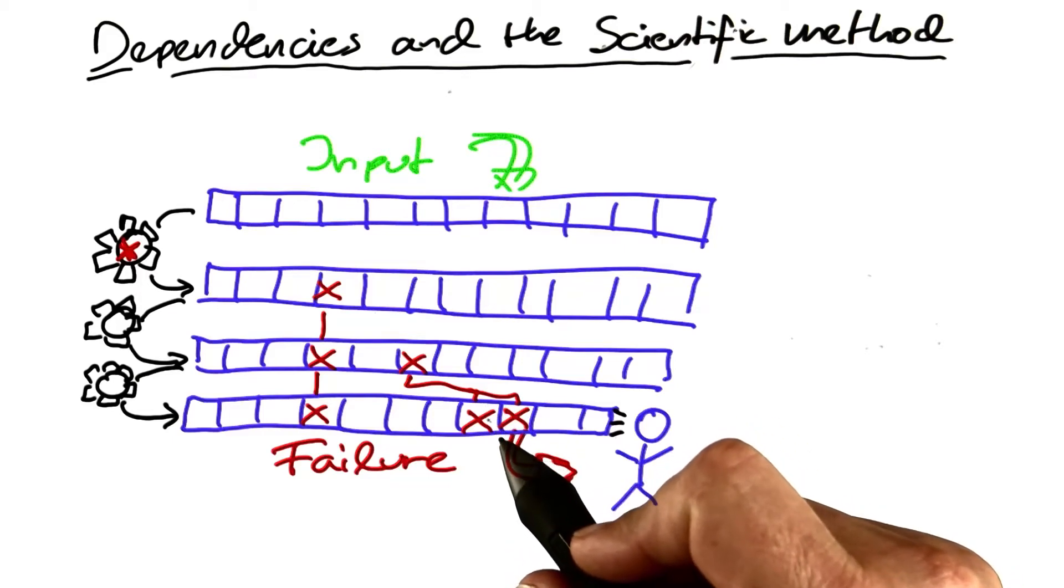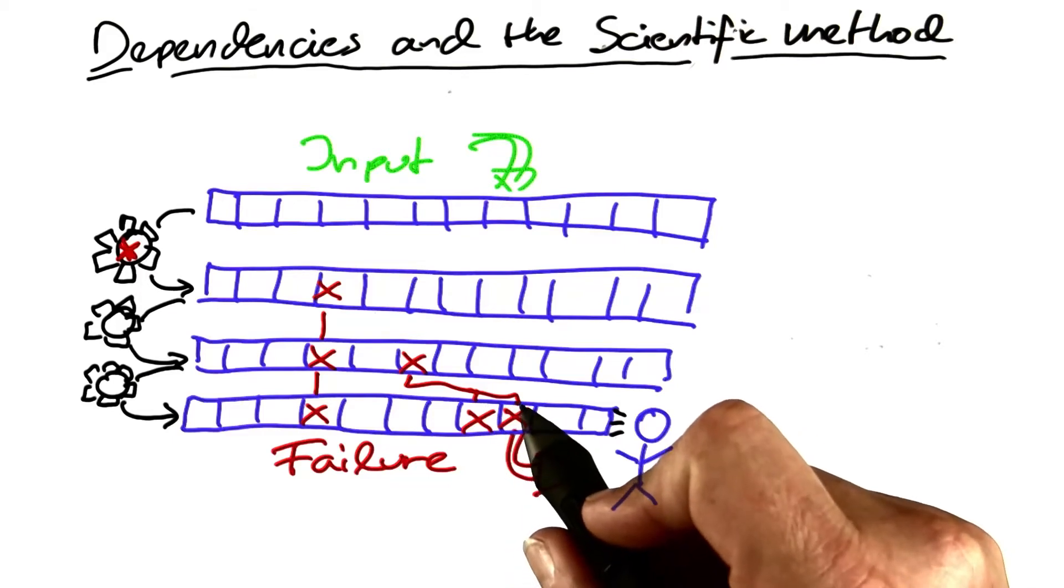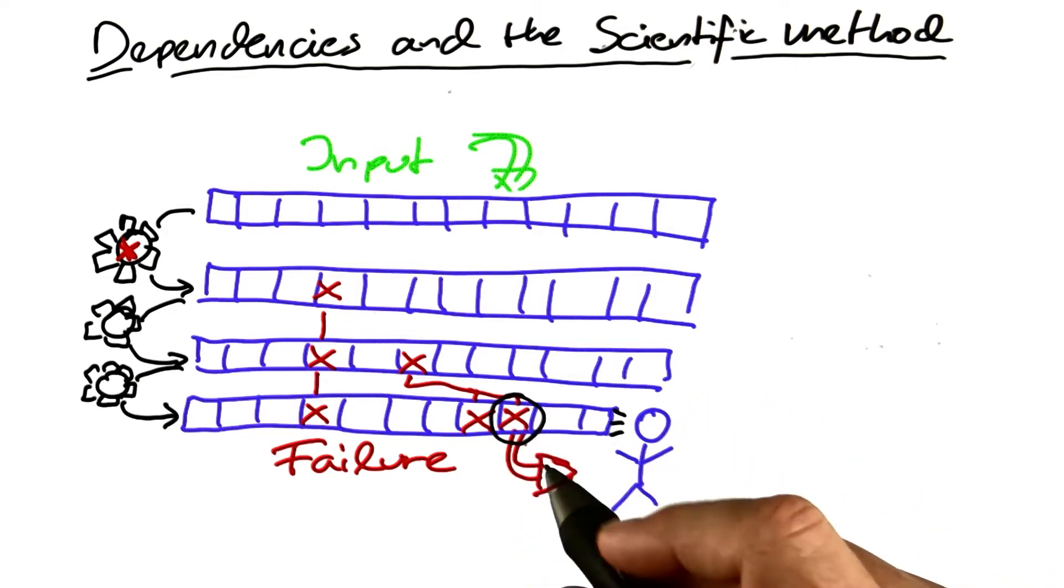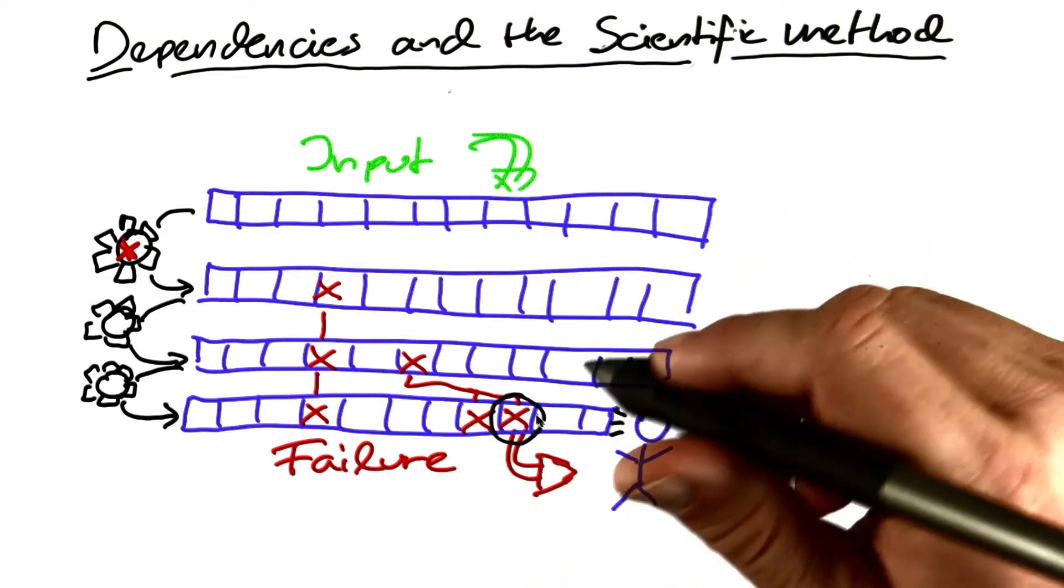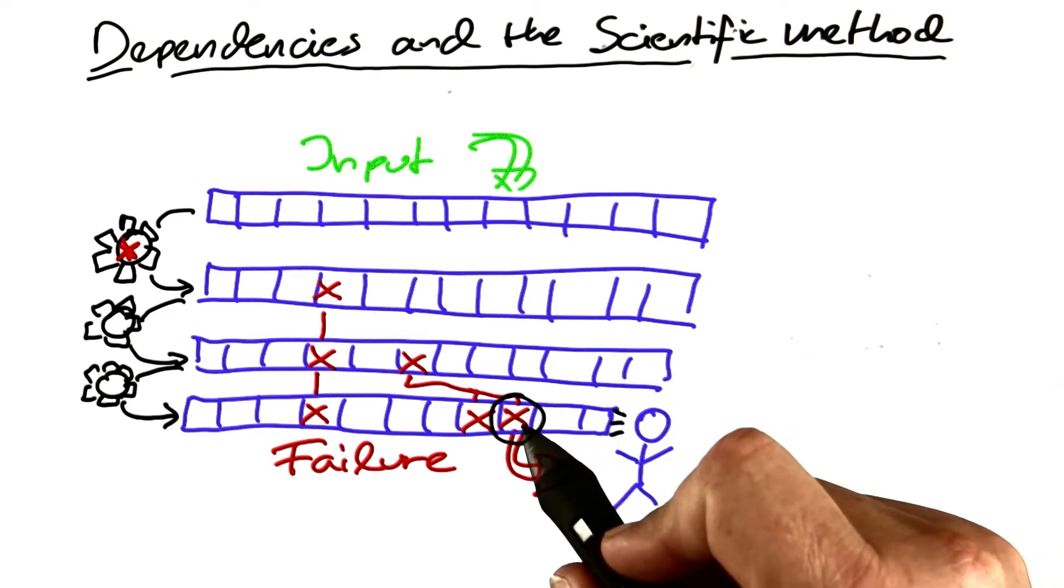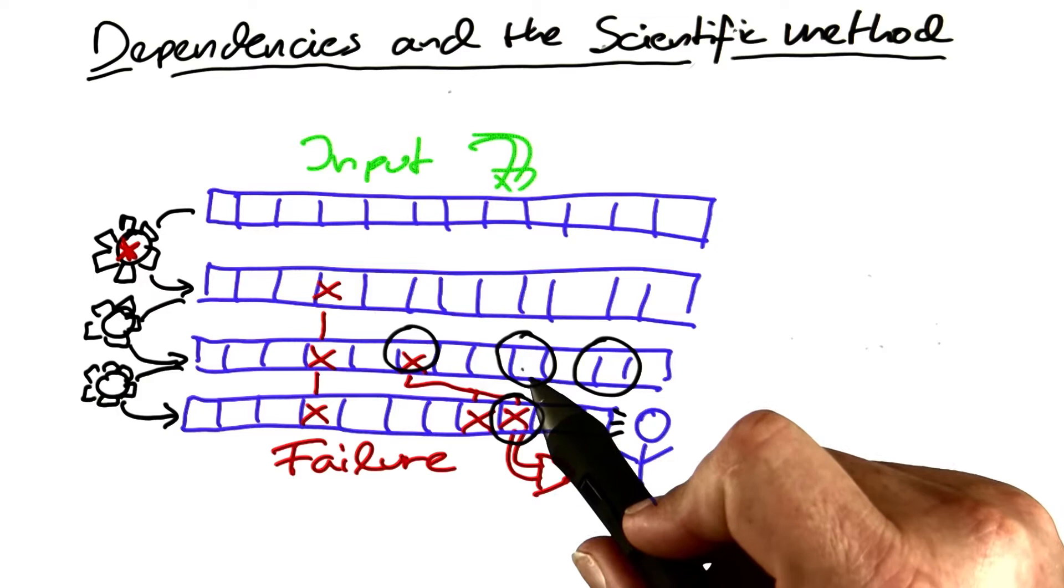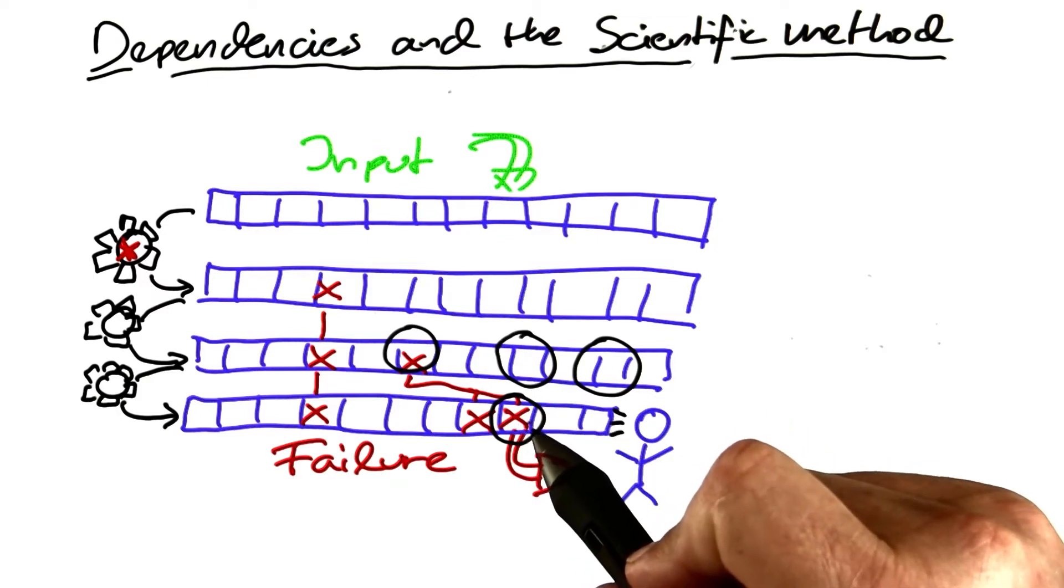How do dependencies fit into our model of debugging? Well, that's fairly straightforward. When we see a failure, we see which part of the state is erroneous, and then we track back the dependencies to see which earlier states could possibly have caused that infection.